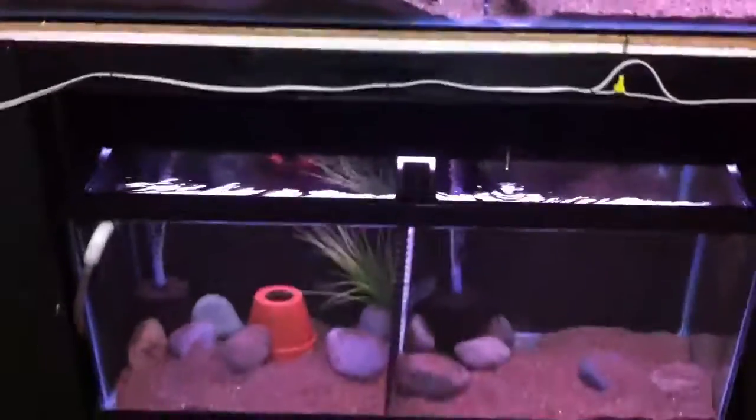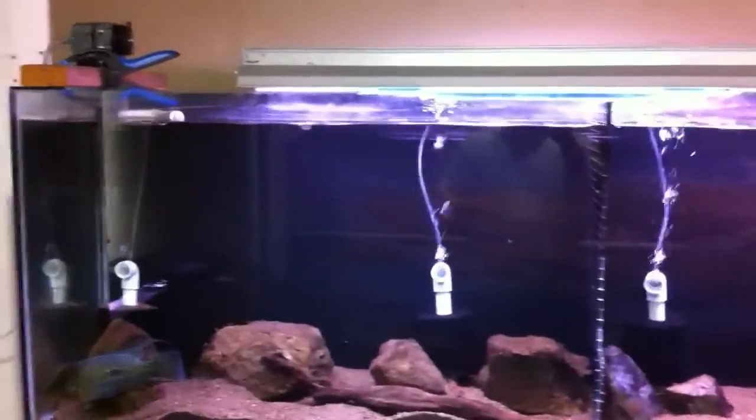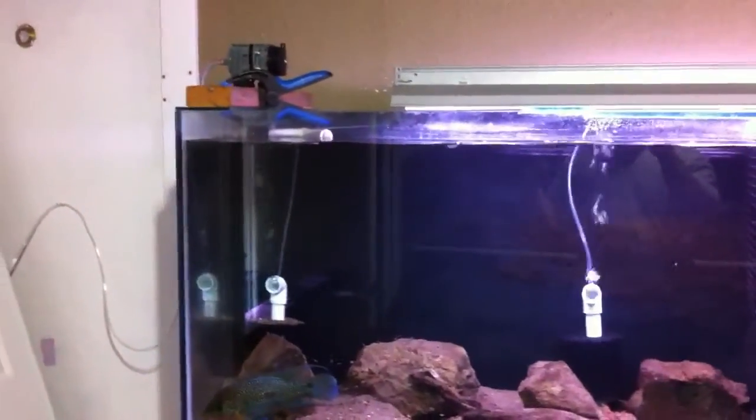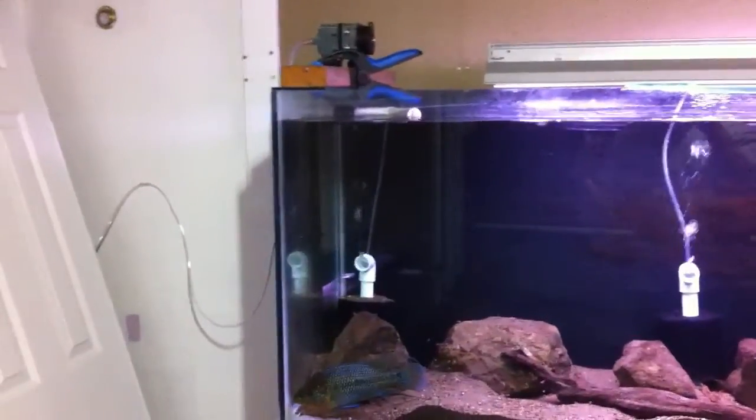I also took out all the heaters out of these tanks. I'm heating the room, heating the room to 78 degrees. I adjusted the temperature on my drip system to about 70 degrees. So instead of heating the tanks individually, I'm heating the room as a collective unit, and that will in turn heat the tanks.